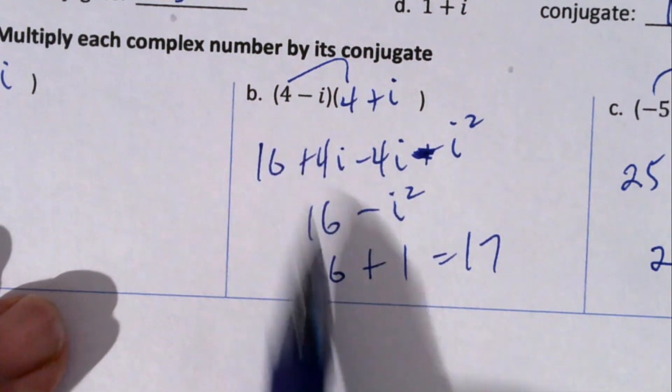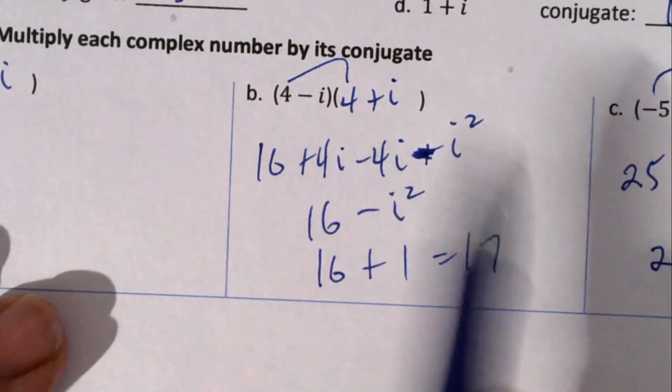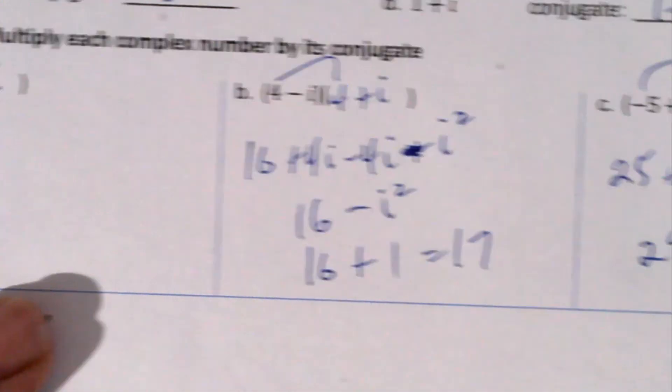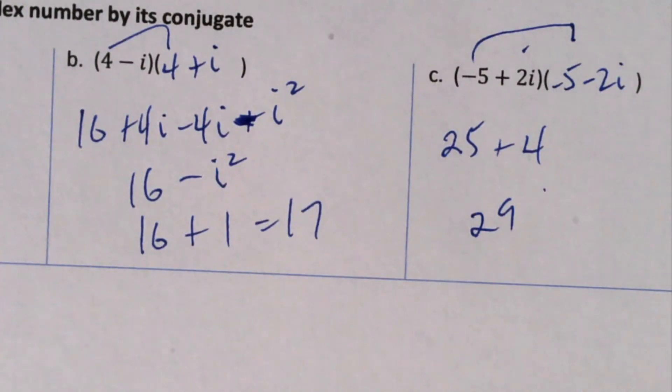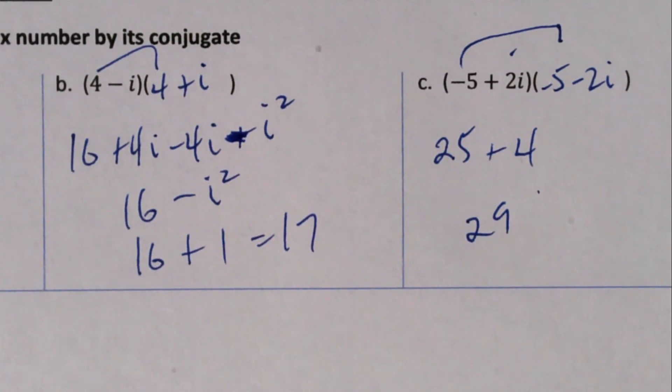Same way: 4² is 16, 1² is 1, and make it a plus - 17. That always works, but it only works when you multiply with the conjugate. And that's it.